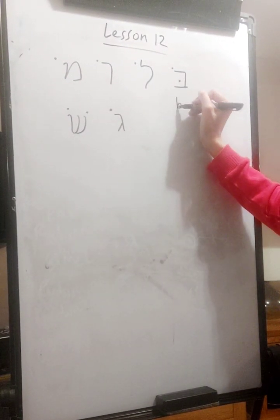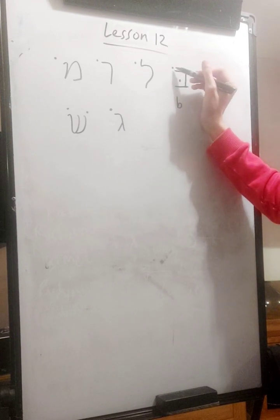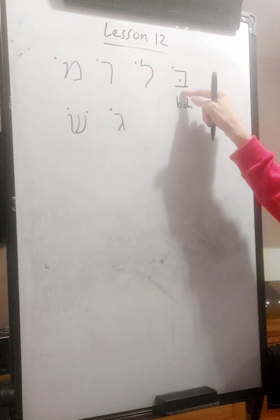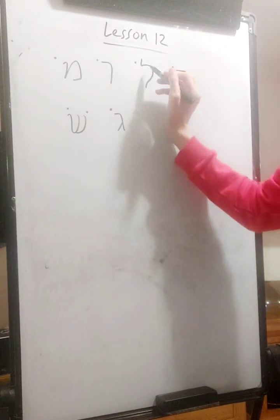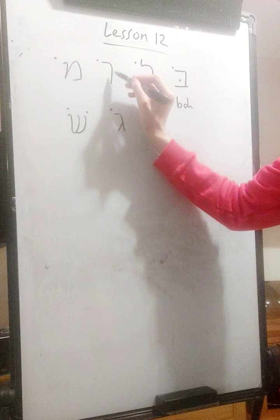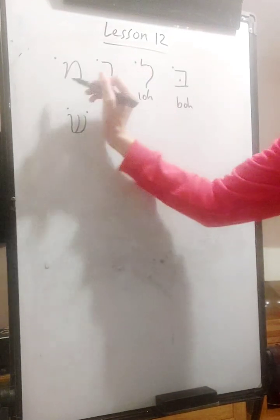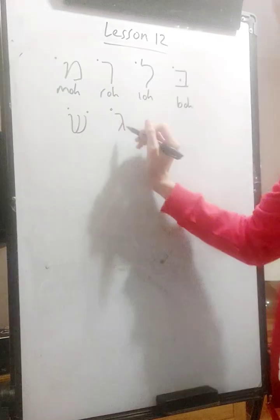So consonant sound. Back. And then you look for the vowel. This is the O vowel. Another way to write the O vowel. So it still sounds as the O. Bow. This one would be low. Consonant sound R. R. O. Row. Mow. Go.